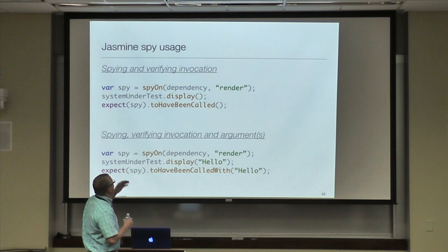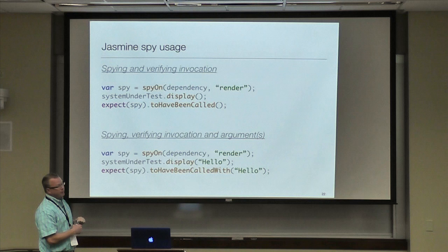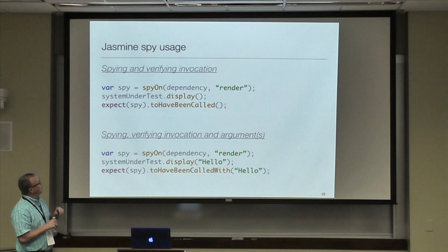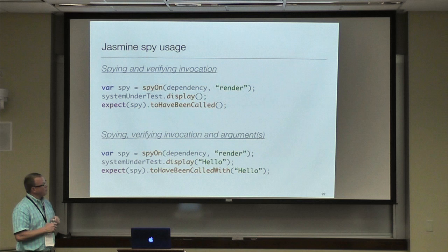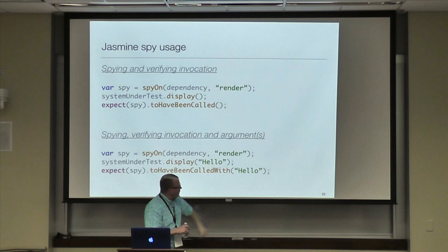Typically you set up your spy, then execute your system under test, and then verify that some sort of interaction or collaboration happened. For example, I have a spy on my dependency which has a render function. My system under test calls `display` on it, and within it I expect that the render method on my dependency will have been called. For verifying indirect outputs to dependencies, I can verify that the dependency was called with certain parameters or arguments.